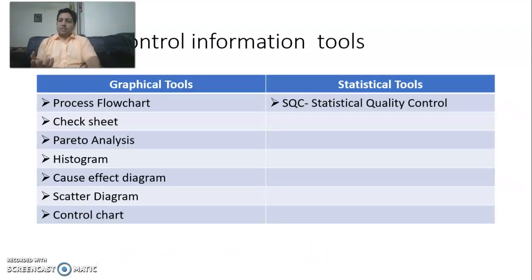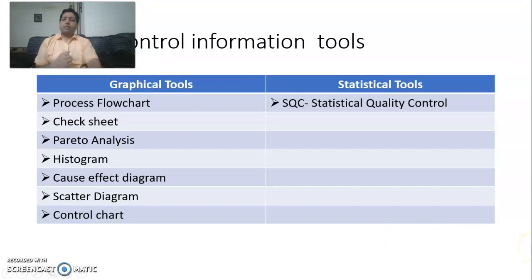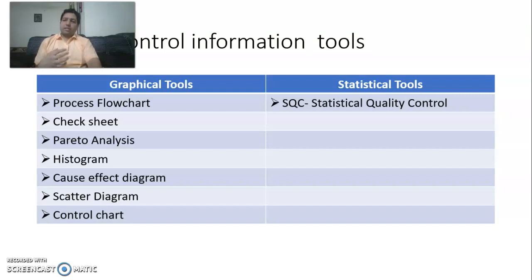The graphical tools include process flow chart, check sheet, Pareto analysis, histogram, cause-and-effect diagram, scatter diagram, and control chart. On the statistical side, Statistical Quality Control, or SQC, uses statistical formulations to analyze quality — determining whether a lot is rejected or accepted as per the organization's standards. The cost subsystem measures various costs involved in the production system.